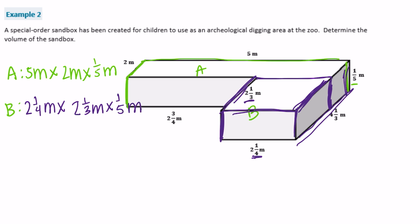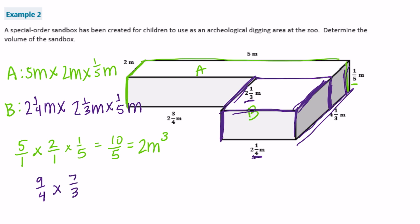Let's solve A: 5 times 2 times 1/5 equals 10/5 or 2 meters cubed. For B: 2 and 1/4 is 9/4, times 2 and 1/3 is 7/3, times 1/5. 9 times 7 is 63, times 1 is 63; 4 times 3 is 12, times 5 is 60, so we get 63/60.